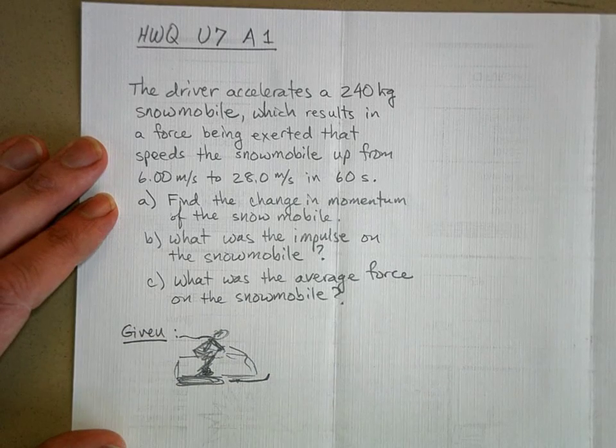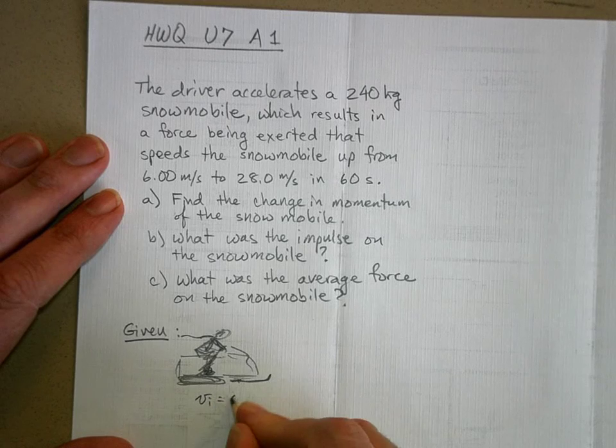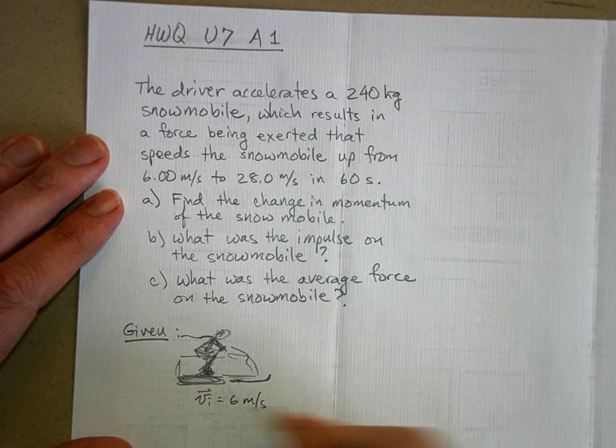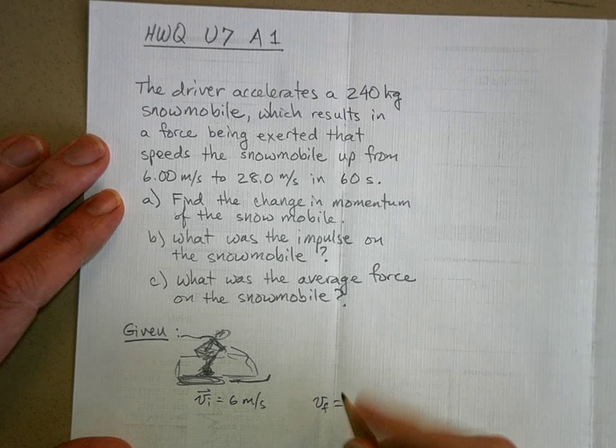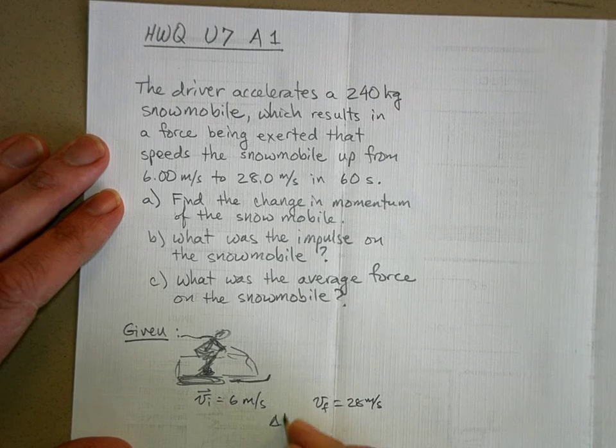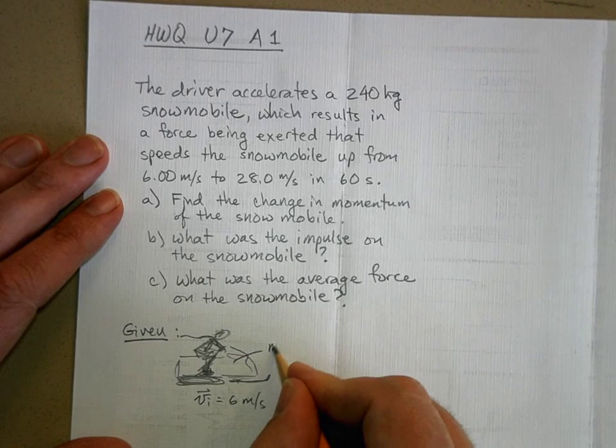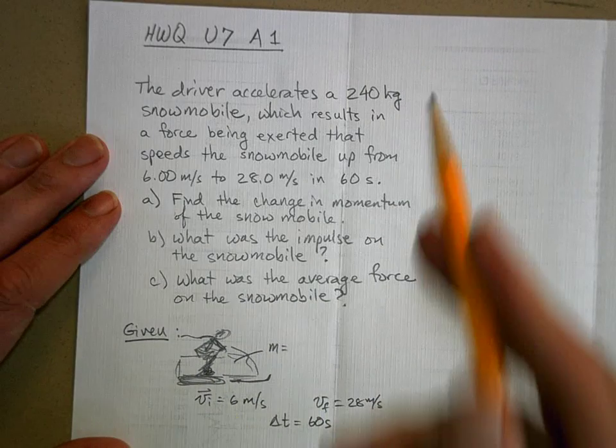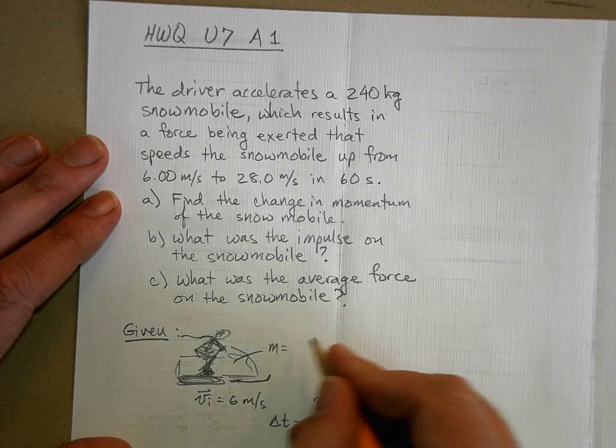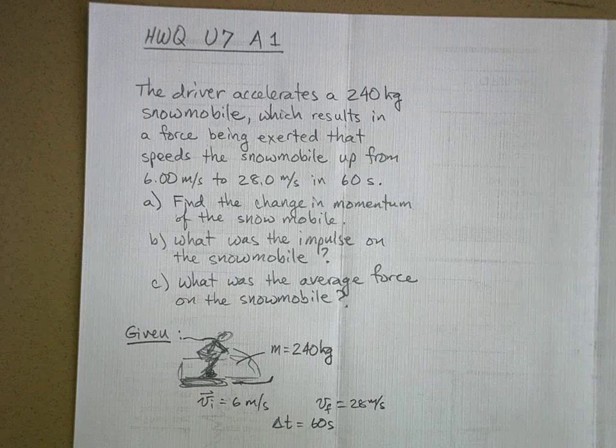So here's my snowmobile, and its initial velocity is 6 meters per second to the right, and its final velocity, I'm not going to draw it again, is 28 meters per second, and the delta t to go from there to there was 60 seconds. And of course, the mass of the snowmobile, and this mass probably includes the mass of the person I would assume, is 240 kilograms.